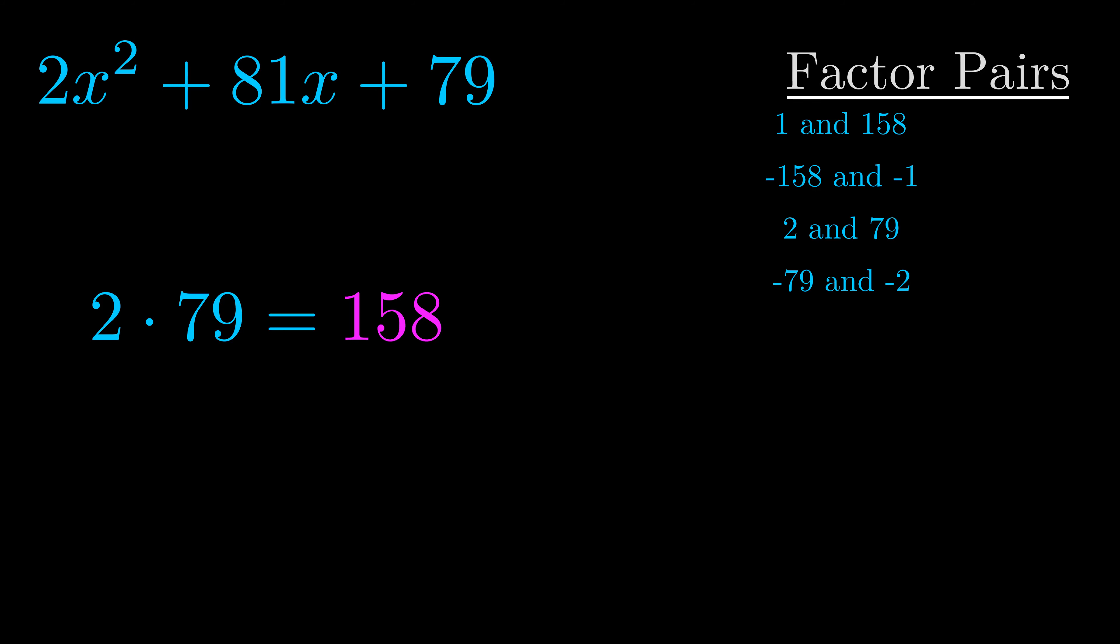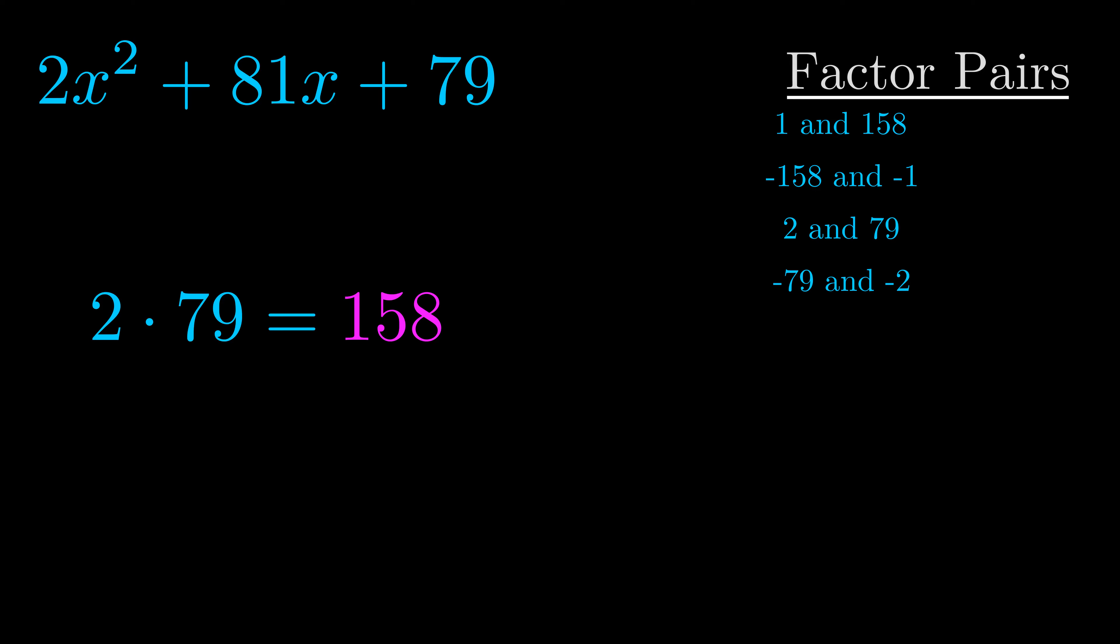Now once you have these factor pairs, the goal is to find which of these pairs adds to the b value. The b value is the coefficient on the x term. That's the middle term, the one that we haven't done anything with yet.